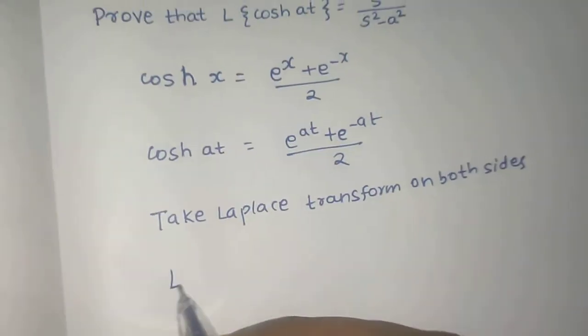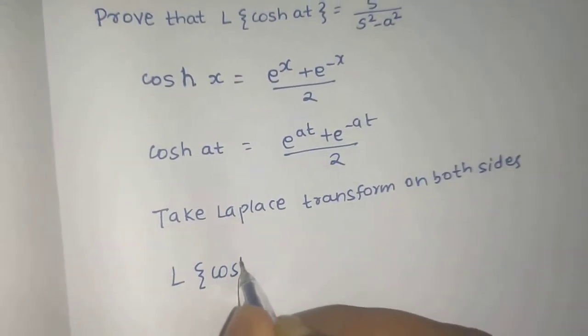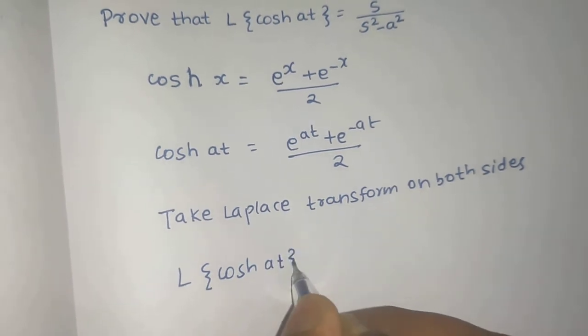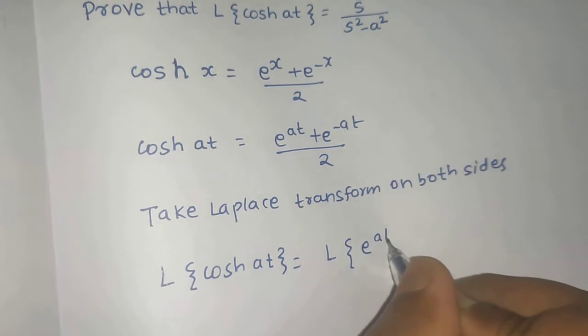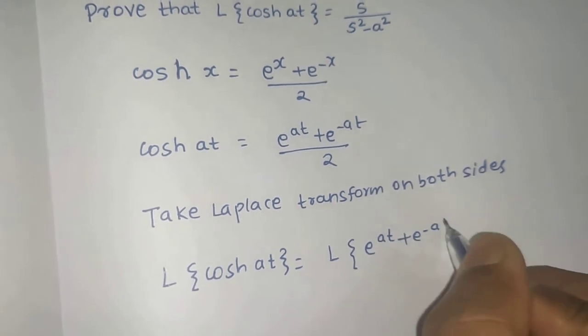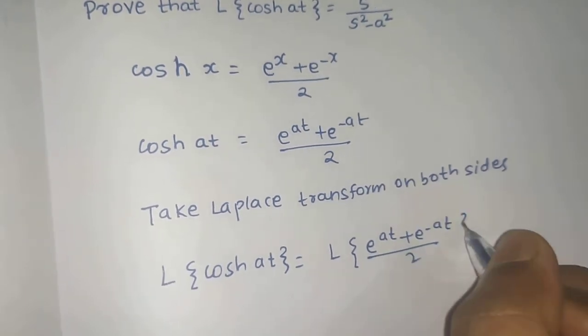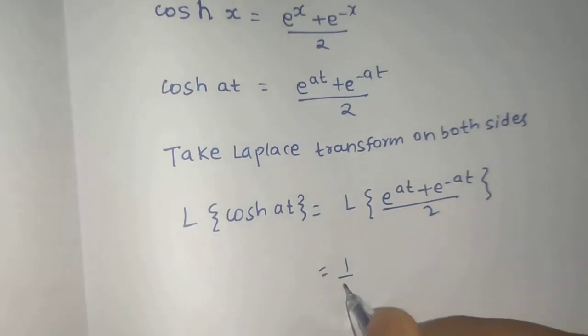I will get Laplace of cosh at being equal to Laplace of e to the power at plus e to the power minus at, divided by 2. So this 1/2 will come out.